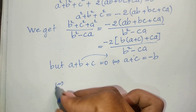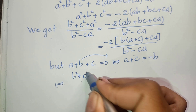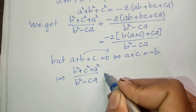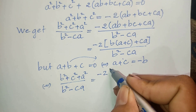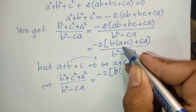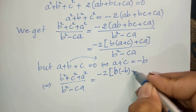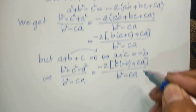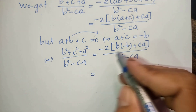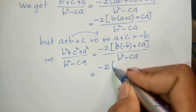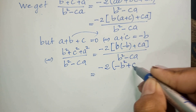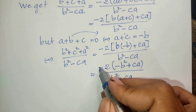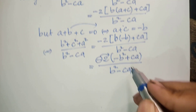So now I have the expression b squared plus c squared plus a squared divided by b squared minus ca equal to negative 2 times b times negative b plus ca, divided by b squared minus ca. Multiplying through, the numerator becomes negative 2 times negative b squared plus ca, which gives 2 times b squared minus ca.